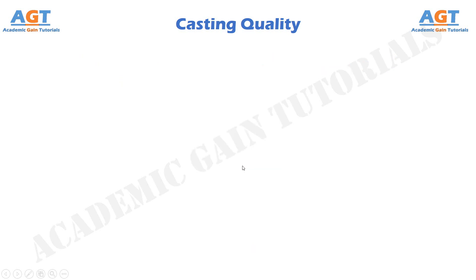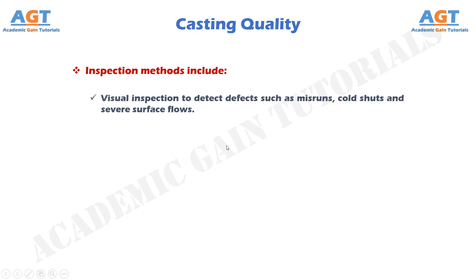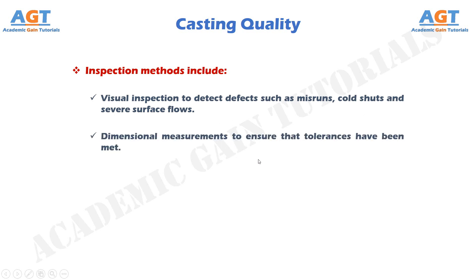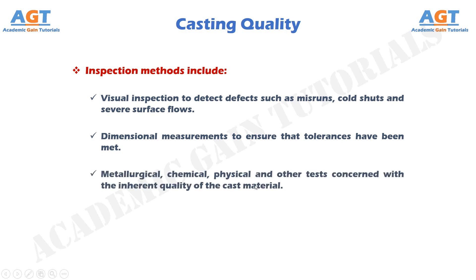Casting quality inspection methods include: visual inspection to detect defects such as misruns, cold shuts, and severe surface flows; dimensional measurements to ensure that tolerances have been met; and metallurgical, chemical, physical, and other tests concerned with the inherent quality of the cast material.